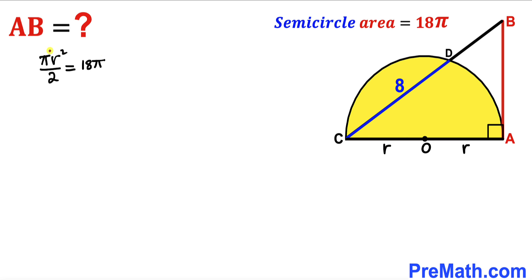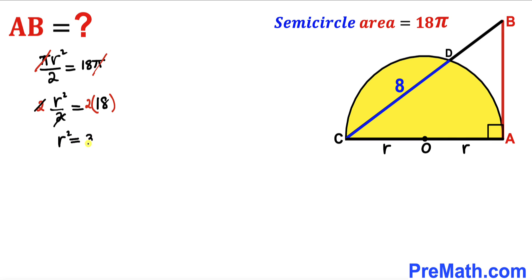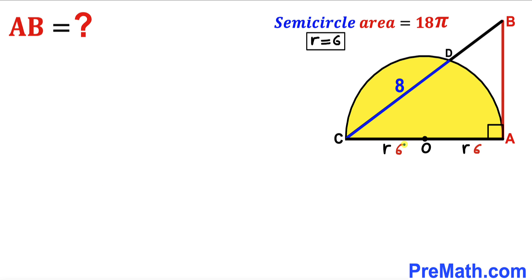Pi cancels from both sides, giving us r²/2 = 18. Multiplying both sides by 2, we get r² = 36. Taking the square root of both sides, our radius r turns out to be positive 6 units.